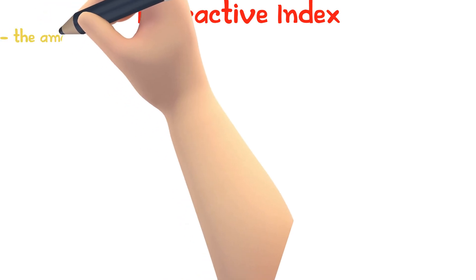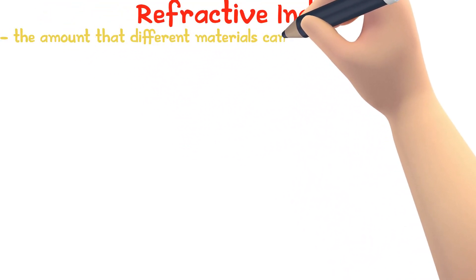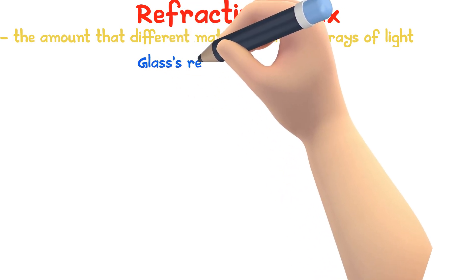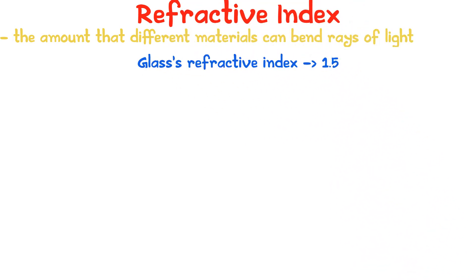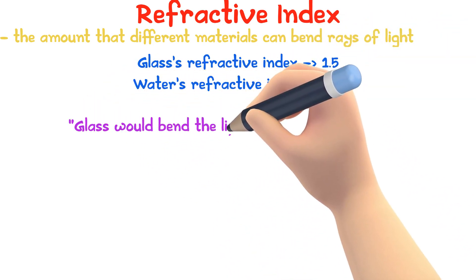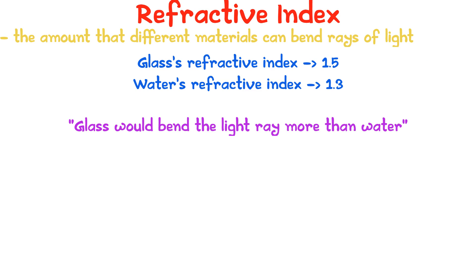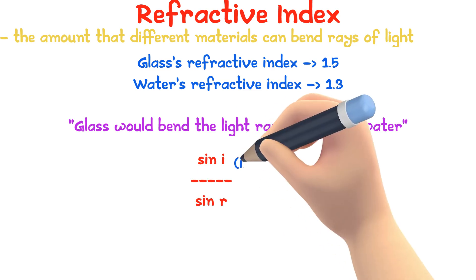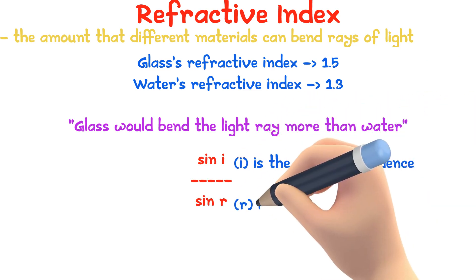Refractive index is the amount that different materials can bend rays of light. Glass's index is about 1.5, water's index is roughly 1.3. This means that glass would bend the light ray more than water. Refractive index can be calculated using the equation sine i over sine r, where i is the angle of incidence and r is the angle of refraction.